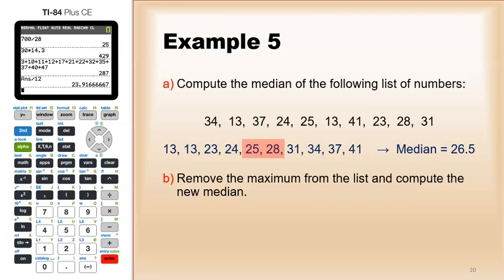Now suppose I cut off that largest number. Suppose I didn't have the 41, so I just have nine numbers now. Well, in this case the median would be the 25, and nothing else to do.